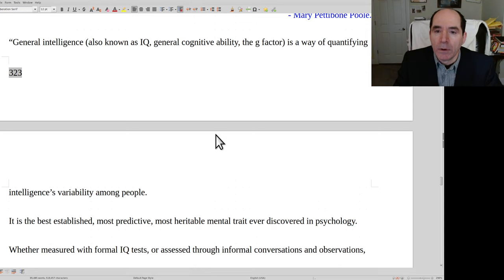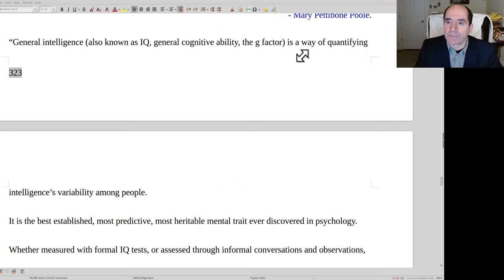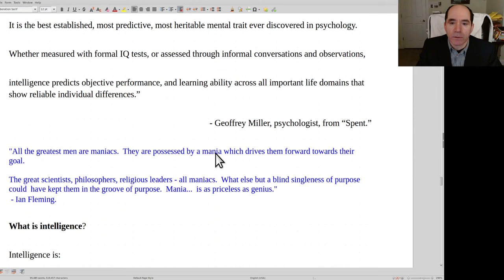General IQ, also known as G or the G factor, is a way of quantifying intelligence variability among people. It is the best established, most predictive, most heritable mental trait ever discovered in psychology. Whether measured with formal IQ tests or assessed through informal conversations and observations, intelligence predicts objective performance and learning ability across all important life domains. So IQ is a very real thing. Jordan Peterson has talked about this a lot. But I would say that one thing all the university guys are wrong about is saying that you can't improve it. Like Binet said, you can improve it a lot.